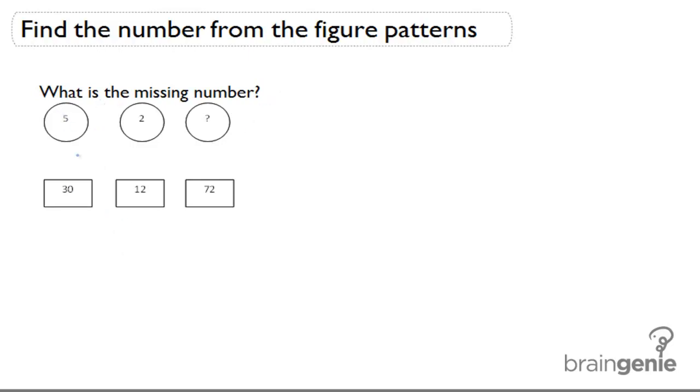We have 5 and then 30, 2 and then 6, 12 and then a blank, and then 72.